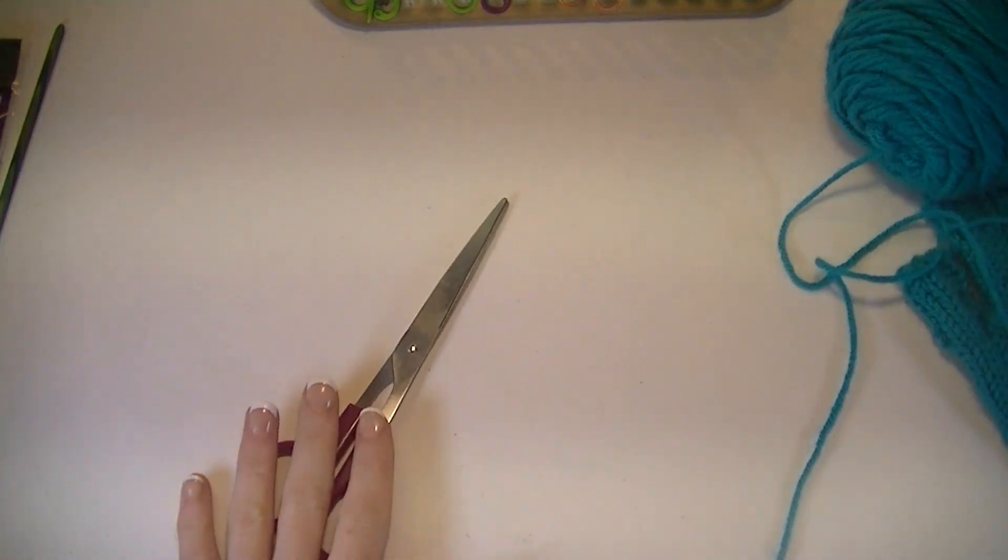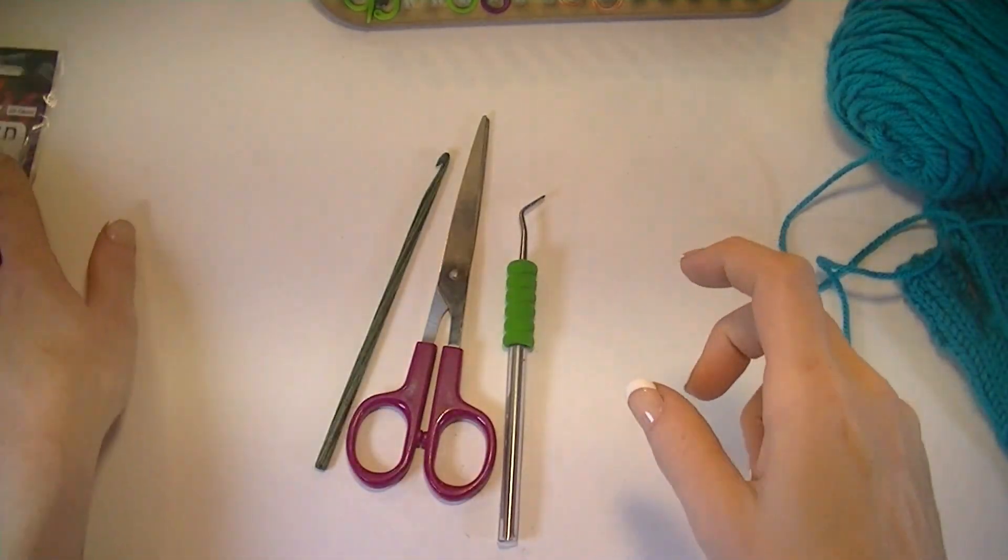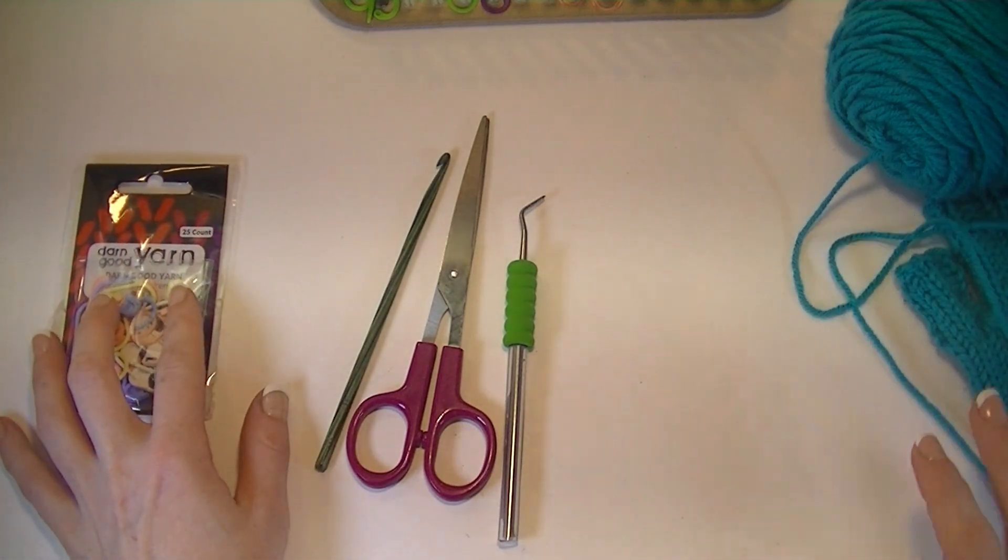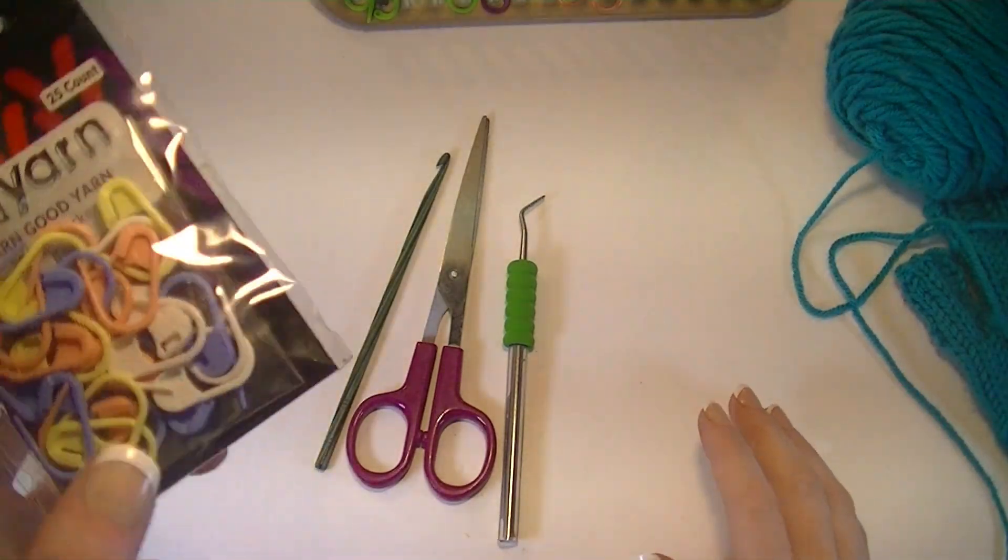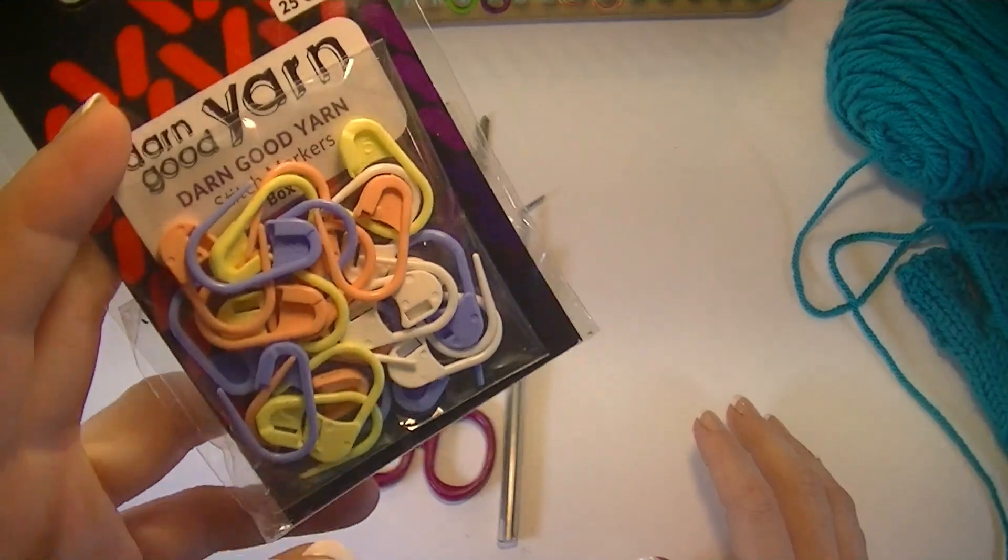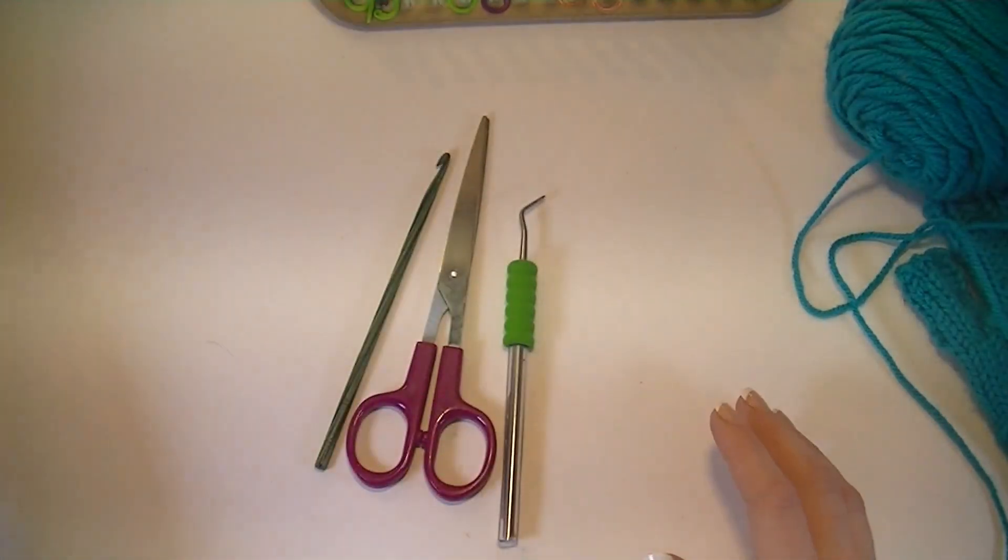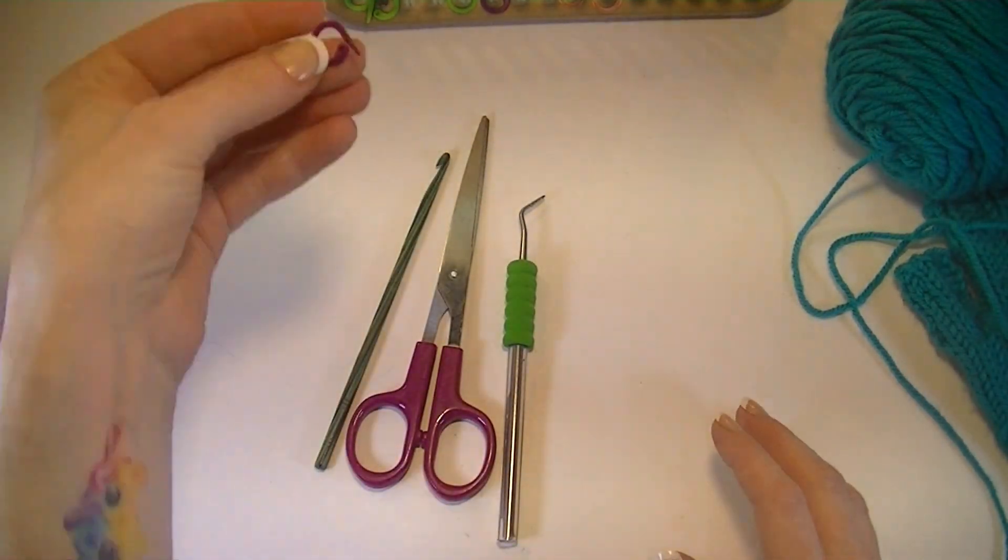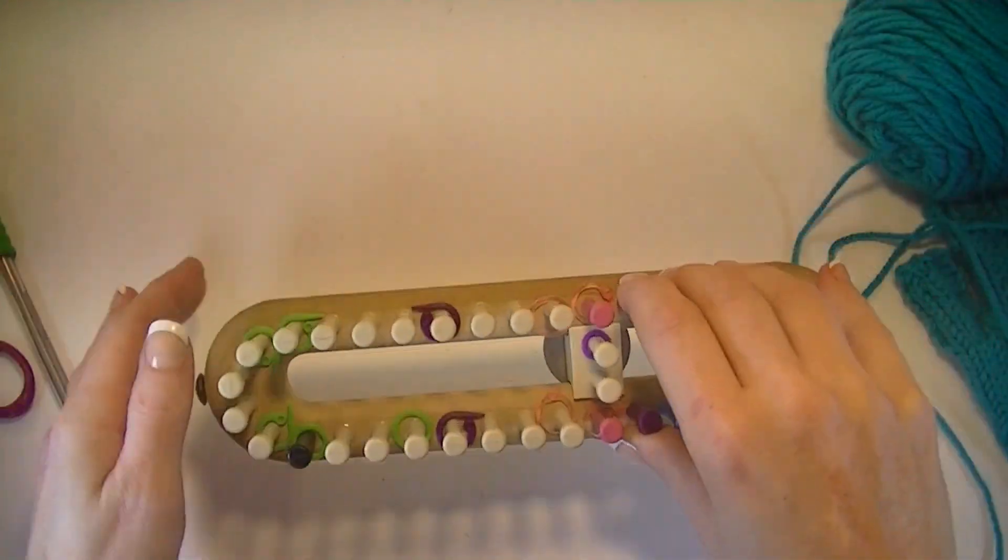You'll need a pair of scissors, loom tool, crochet hook, tapestry needle, and a way to mark your pegs. You can use these types of stitch markers. There's all different types you can purchase or even make your own.